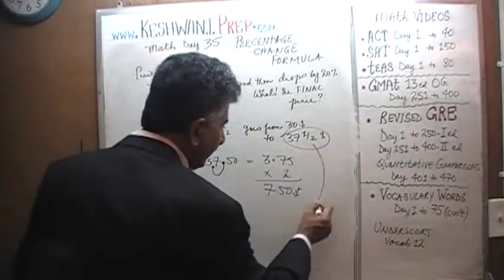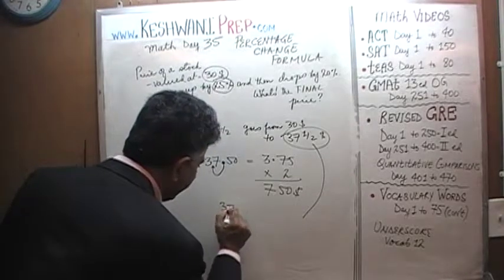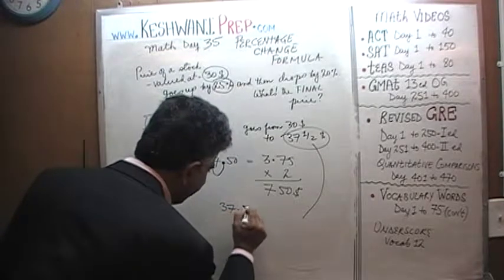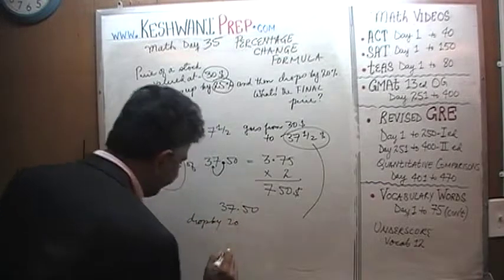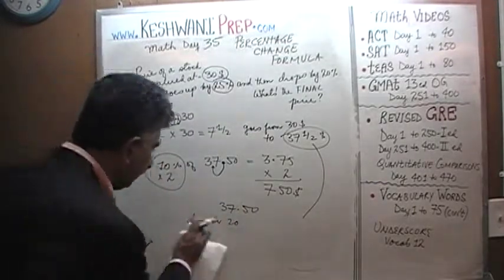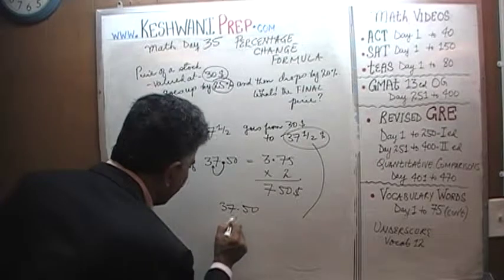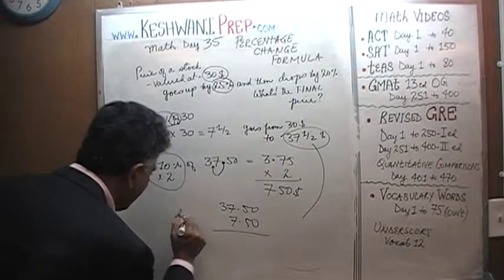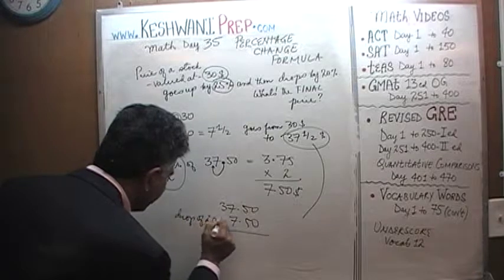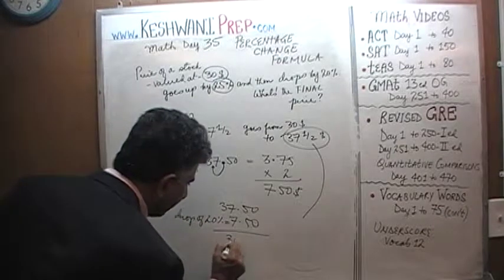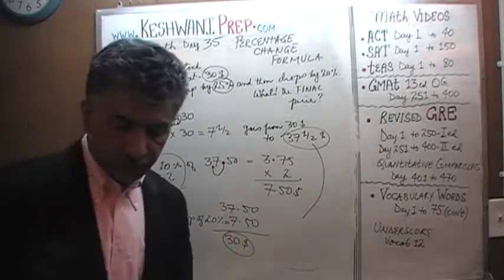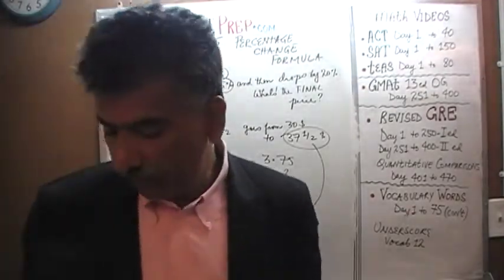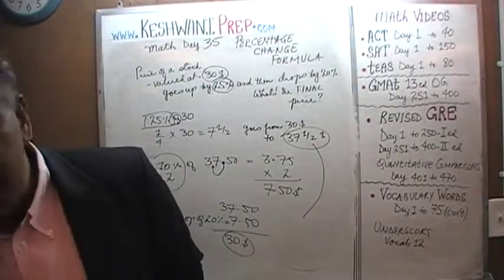So we were at $37.50. Then it drops by 20%, which is $7.50. And we're back to where we started. The question is, what was the purpose of this problem? What was the point in this problem? What is it that we want to get out of it? Here's what we want to get out of it.